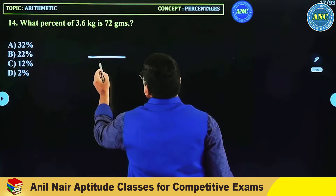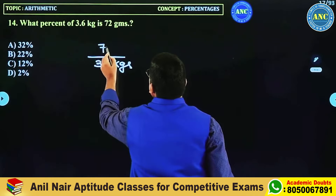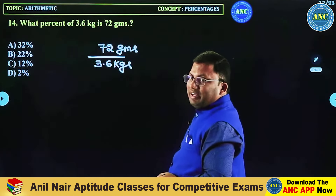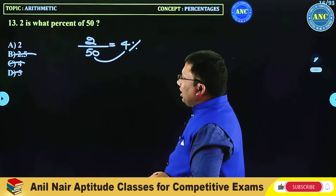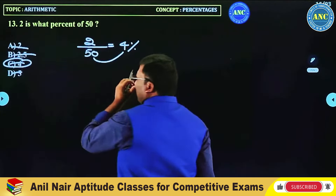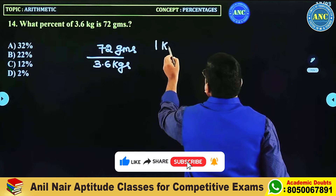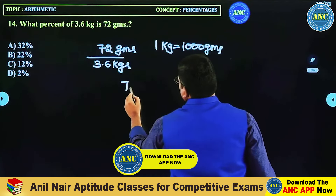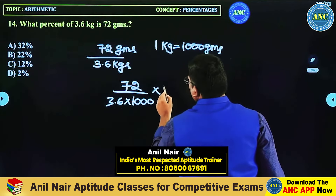Next problem: out of 3.6 kg, how much is 72 grams as a percentage? This is equivalent to asking: 2 is what percentage of 50. Out of 50, how much is 2? Option C is the right answer. Digital sum match — the idea is clear. Since 1 kg = 1000 grams, this will be 72 divided by (3.6 × 1000), multiplied by 100 percentage.